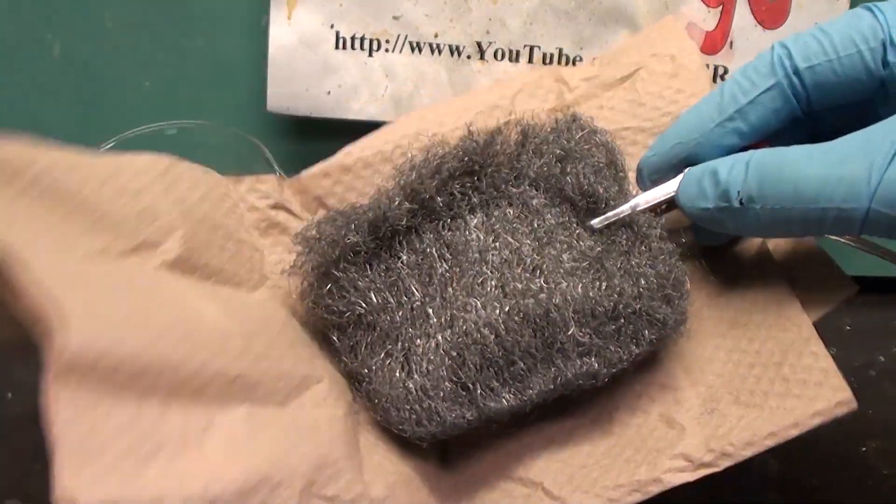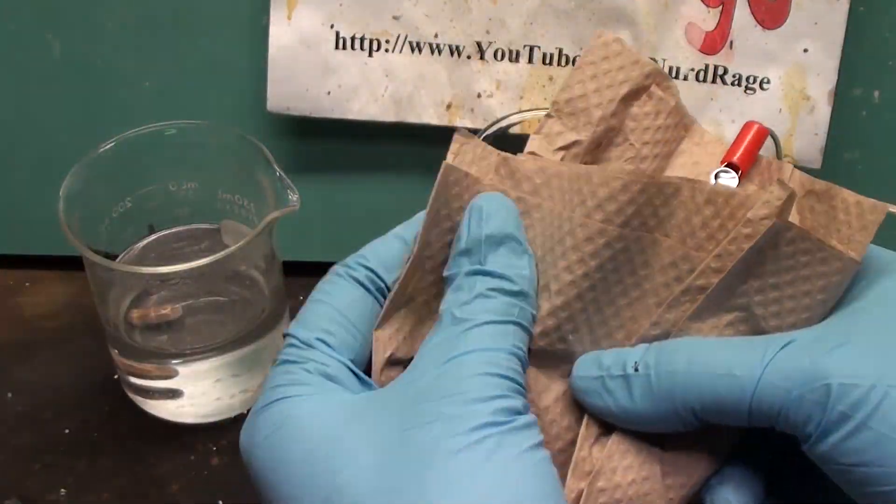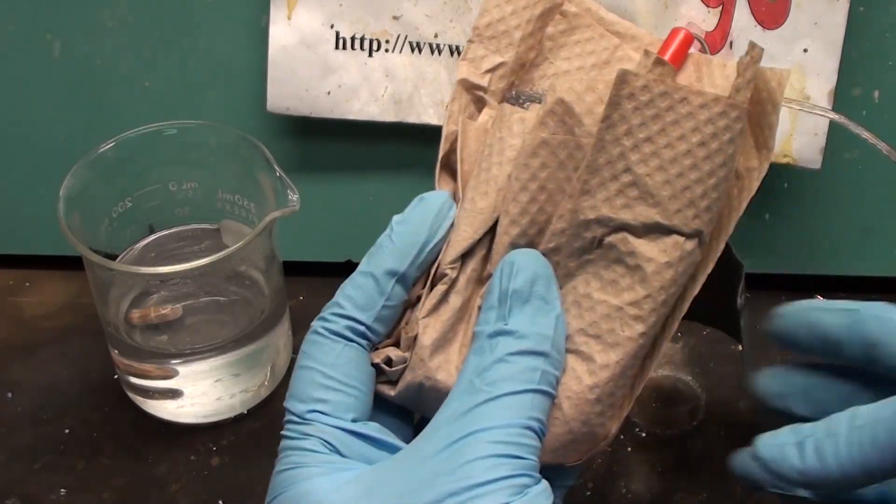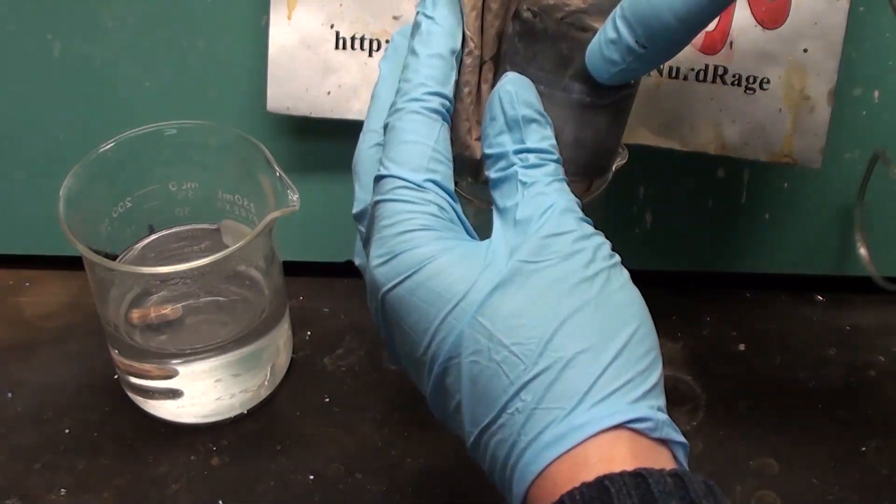Get a paper towel and wrap the steel wool. The idea is that we don't want to touch the zinc metal. Now get the zinc metal and wrap it over the paper towel and steel wool.